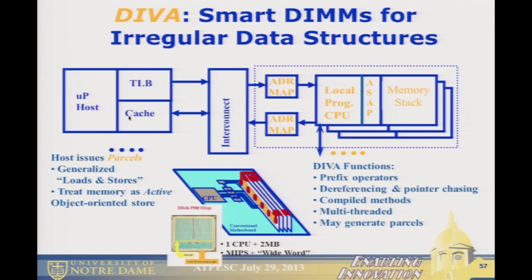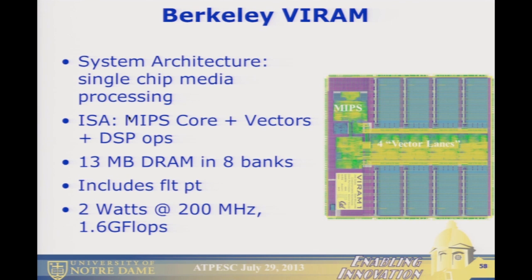There was also the Diva project, which I was part of: DIMMs that plugged into a normal workstation where each chunk of memory had a small processor next to it that could talk to other processors in the memory and do processing right there. Berkeley's Patterson built the VIRAM — eight memory blocks with a large vector processor down the center. And there was the HTMT project, which Paul was also part of, aiming for a petaflop by 2005 using every technology known at the time — superconducting RSFQ logic processors with two levels of PIM memory.